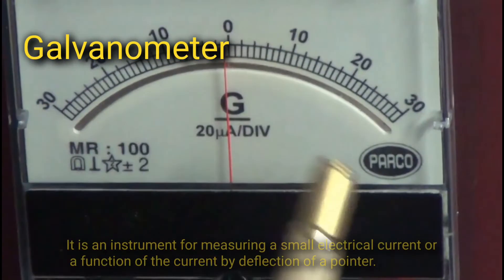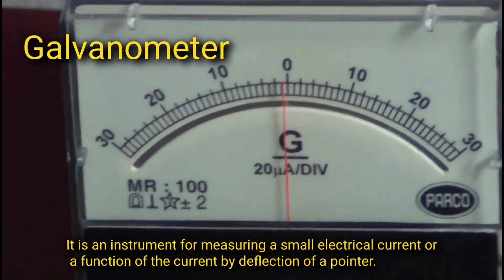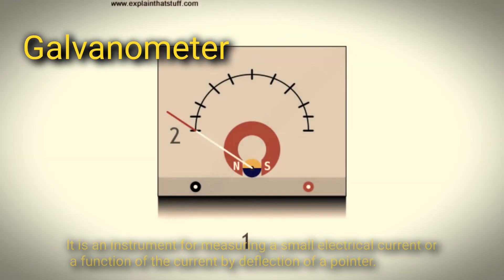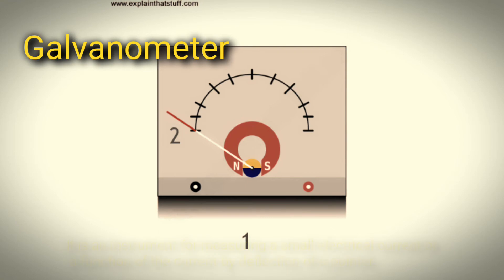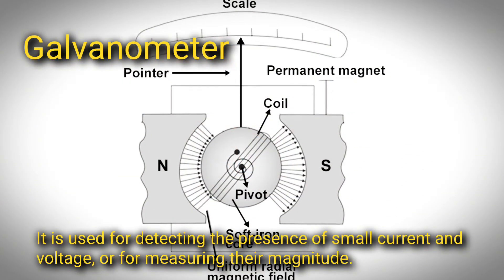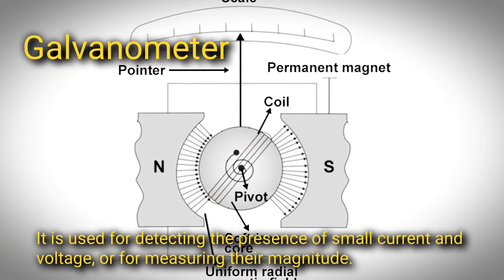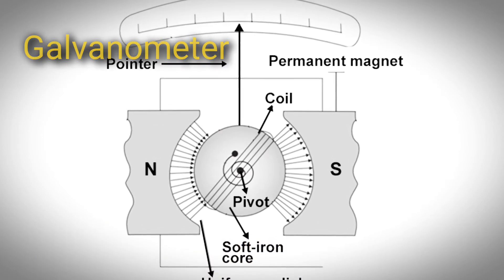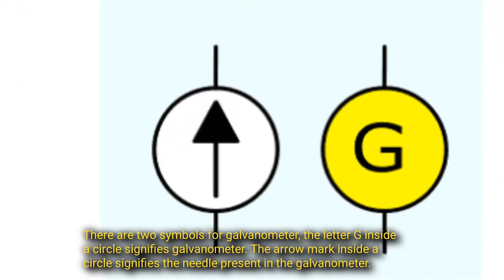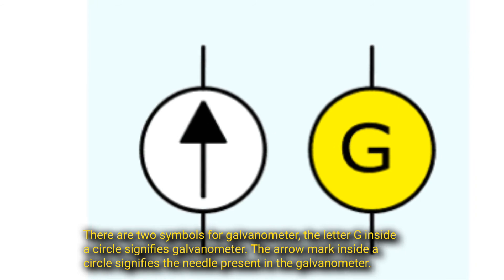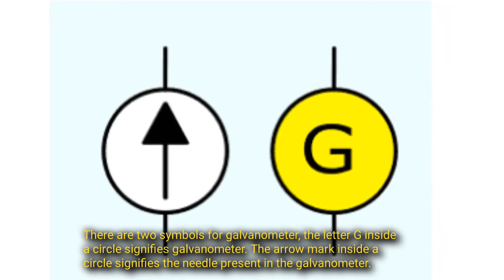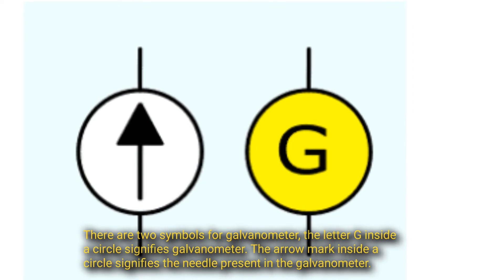Galvanometer: it is an instrument for measuring a small electrical current, or a function of the current by deflection of a pointer. It is used for detecting the presence of small current and voltage, or for measuring their magnitude. There are two symbols for a galvanometer: the letter G inside a circle, and an arrow mark inside a circle signifying the needle present in the galvanometer.